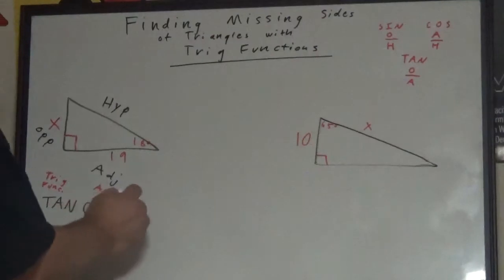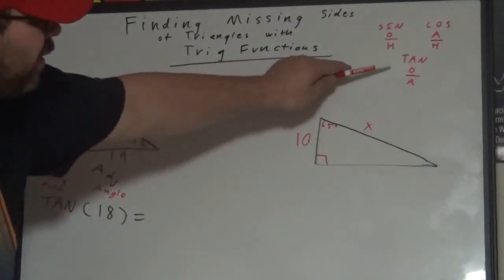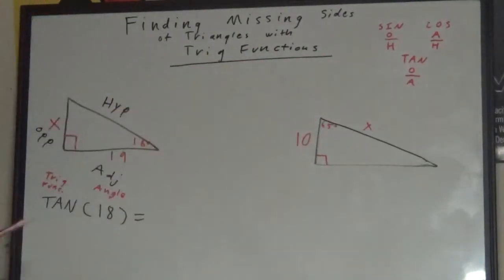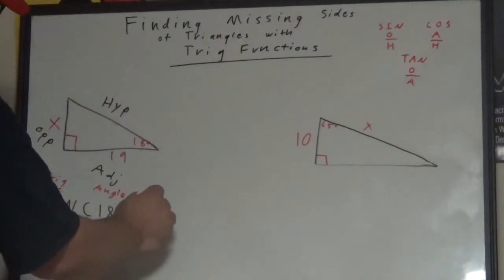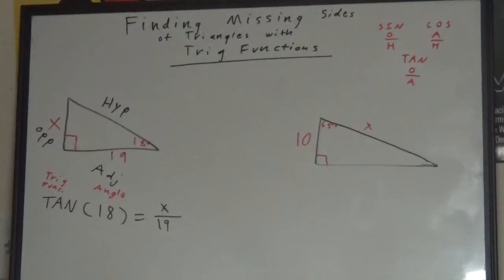So tangent of 18, and we're setting this up equal to opposite divided by adjacent. Our opposite value is x, our variable. It's our unknown value, and adjacent is 19.